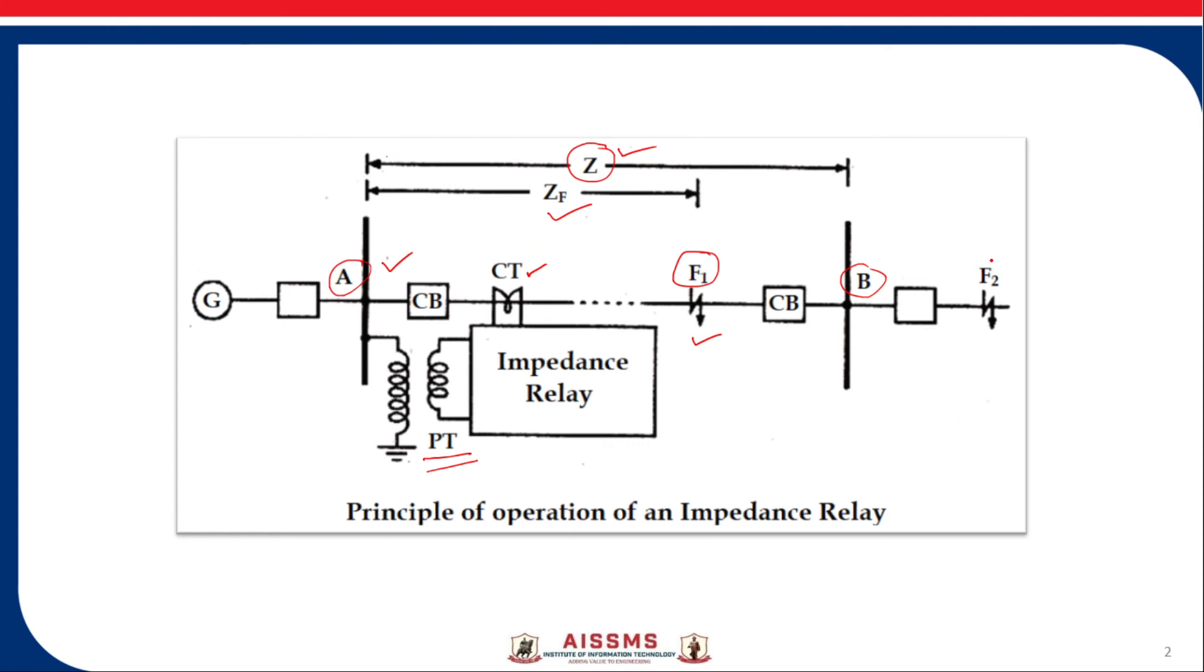For the fault F2 occurs beyond the protected zone the impedance ZF will be greater than Z. In this case, ZF2 is greater than Z and that's why the relay does not operate.